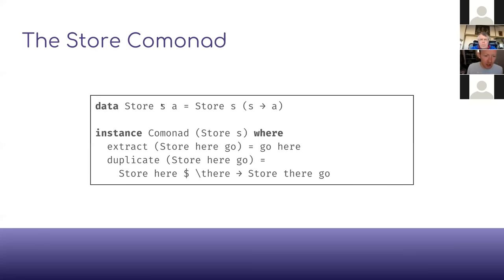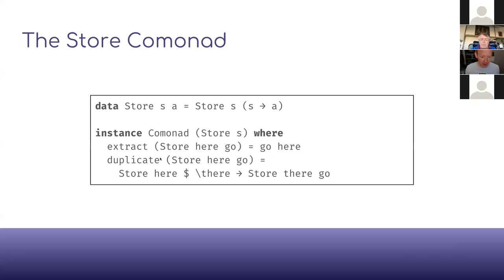Here's one comonad called the Store comonad. A Store of S at A consists of a value of type S — the current state of a system — and a function that given any state produces a return type of type A, the output type. To extract, you apply the function to the current state. To duplicate, you return a Store whose current state is the same state, but when rendering any given state you return a whole Store centered around that new state but with the same rendering function.